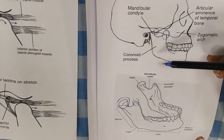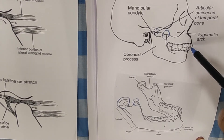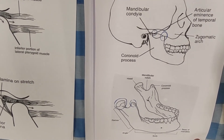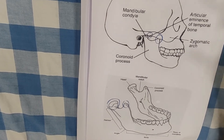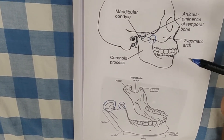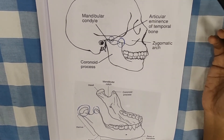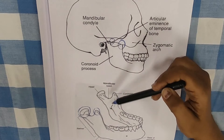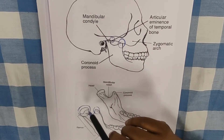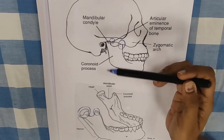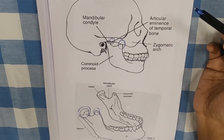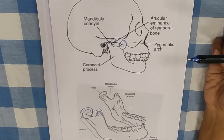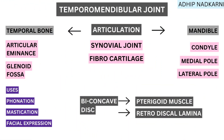The TMJ joint is generally considered a synovial joint, but it does not contain hyaline cartilage — it has fibrocartilage. Fibrocartilage is usually present in joints which require a lot of stability rather than mobility. Although the temporomandibular joint is mobile, it keeps working throughout the day, so the stresses on it are high. This is why it has fibrocartilage instead of hyaline cartilage. So it is an exception: though classified as a synovial joint, it has fibrocartilage lining the joint surfaces.